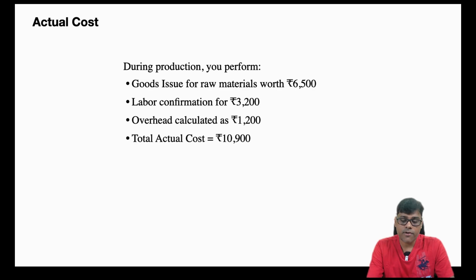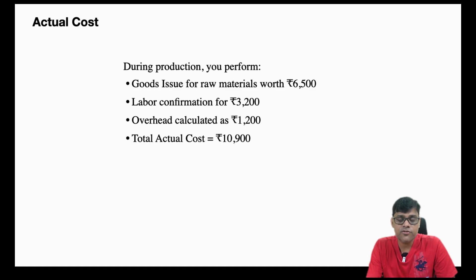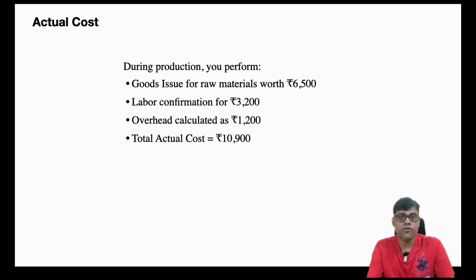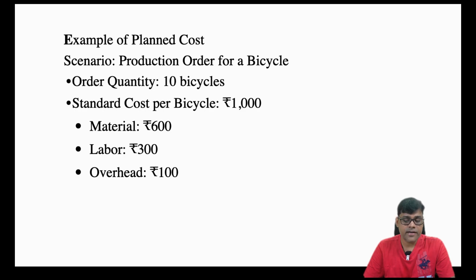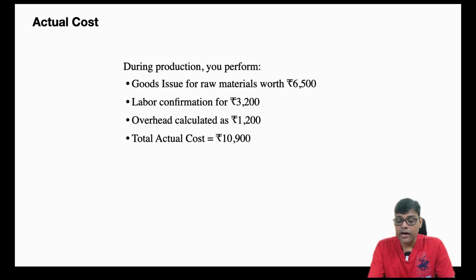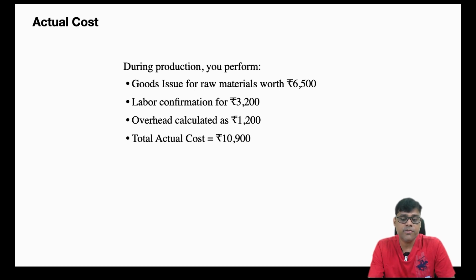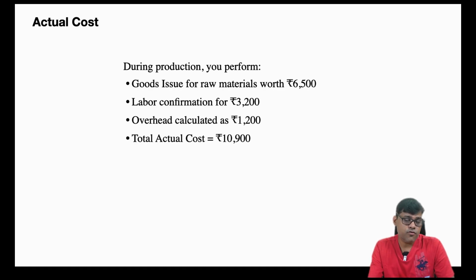The actual data comes from real postings in various modules — FI, MM. Goods issue for raw material is 6500, labor confirmation cost is 3200, overhead cost is 1200. These are all actual figures. The planned cost was 10,000 for 10 items (1000 × 10), whereas actual cost for the 9 bicycles manufactured is 10,900. Actual cost will always be calculated using real transactions from different modules.